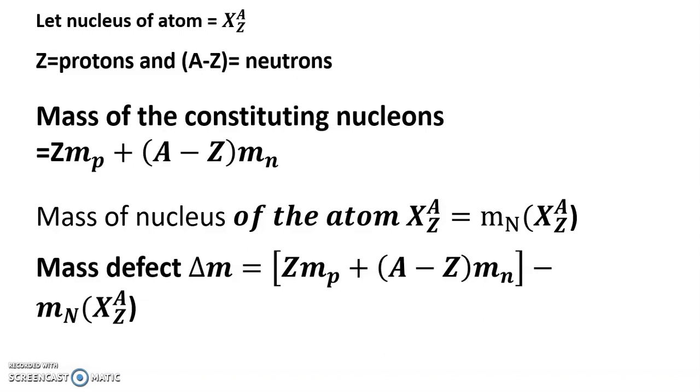If m_N is mass of the nucleus of the atom Z X A, then mass defect is given by del m equals Z m_p plus A minus Z m_n minus m_N of X_Z^A.